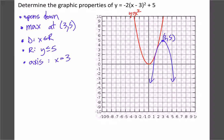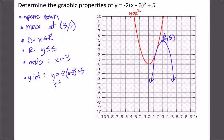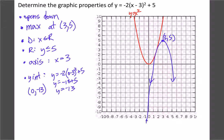Now let's figure out the x and y-intercepts. For the y-intercept, put 0 in for x: we get (0 minus 3) squared plus 5. Negative 3 squared is 9, times negative 2 is negative 18, plus 5 gives us negative 13. So we have a y-intercept at (0, negative 13) — if we extended the graph far enough, it would cross the y-axis down at negative 13.